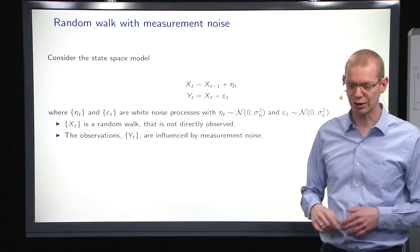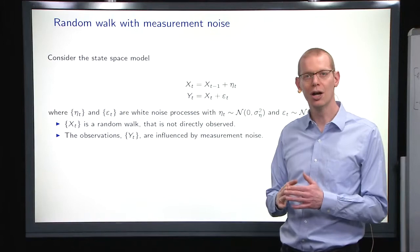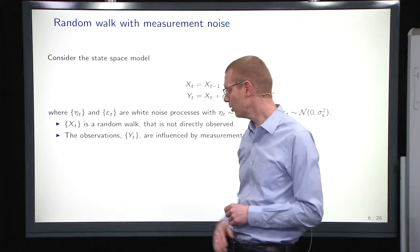So both these noise processes are considered to be white noise with each their own variance, and that basically means that when you look at Xt here, it's what it was before plus a random number. That means, what is the name for that process? Think of it for a second.